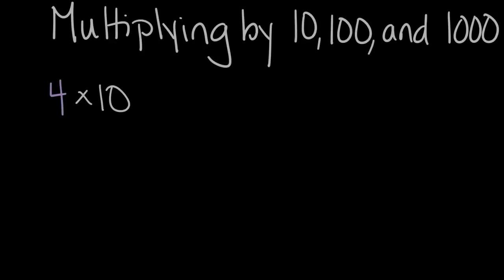Let's talk about multiplying by 10, 100, and 1,000. There are some cool number patterns that happen with each of these, so let's start with something like four times 10, one that maybe we're comfortable with or already know.